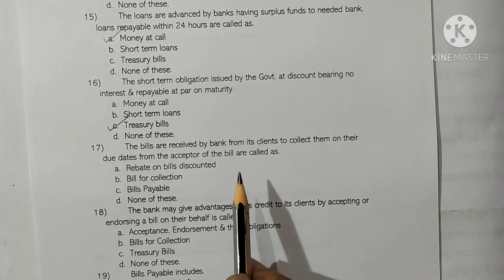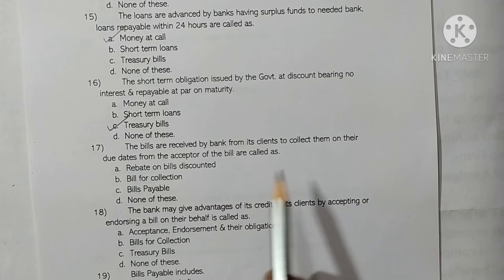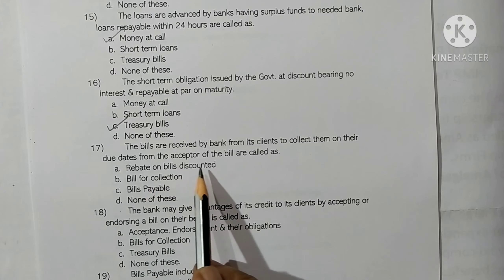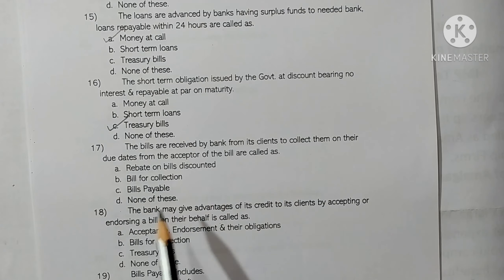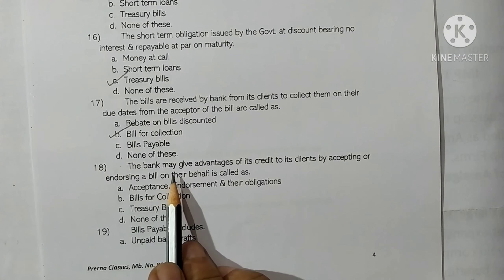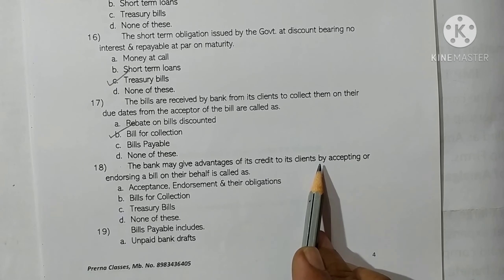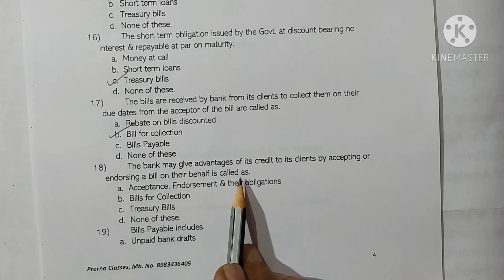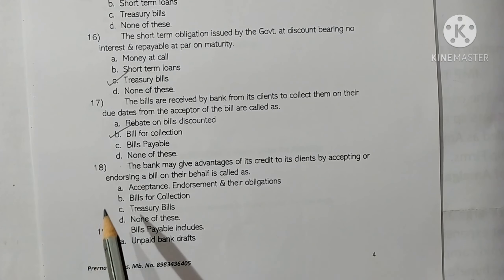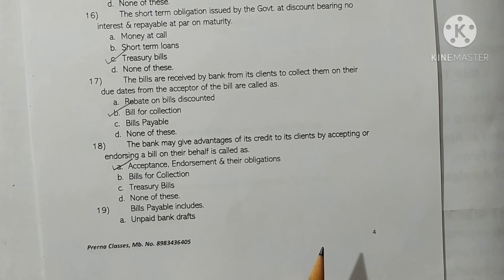Bills issued by a bank to its clients to collect them on their due dates from the acceptor are called bills for collection. Option B is correct. When a bank gives the advantage of its credit to clients by accepting or endorsing a bill on their behalf, it is called acceptance, endorsements and their obligations. Option A is correct.